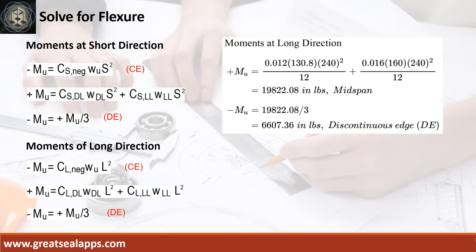Moments at long direction: positive moment at mid-span is 19,822.08 inch-pounds; negative moment at discontinuous edge is 6,607.36 inch-pounds.